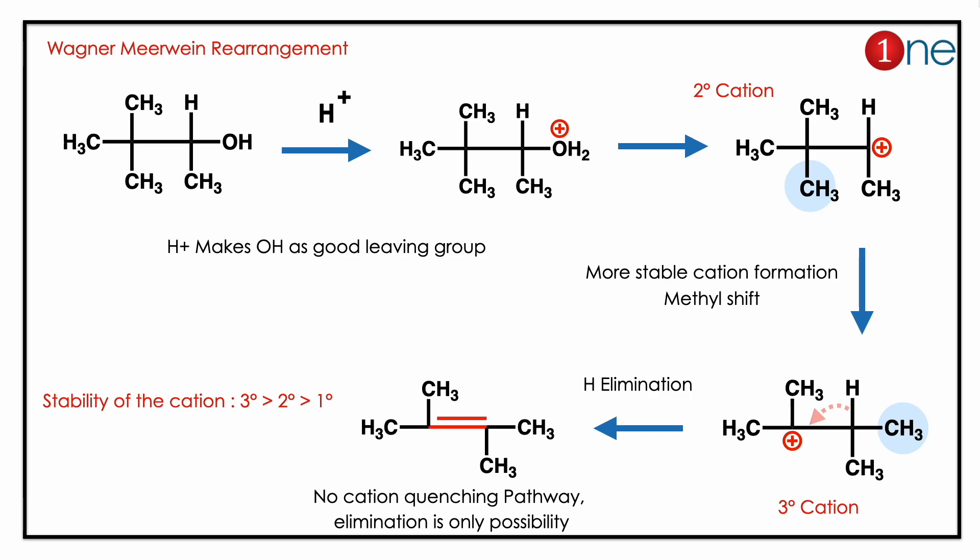The tertiary carbocation is then quenched by hydrogen elimination — an elimination reaction. The key concept here is that the stability of the carbocation dictates the Wagner-Meerwein rearrangement reaction.